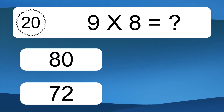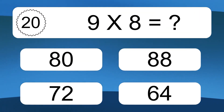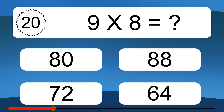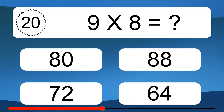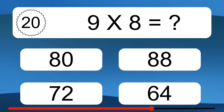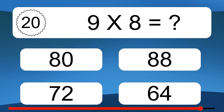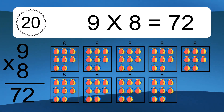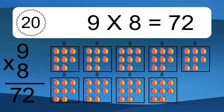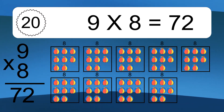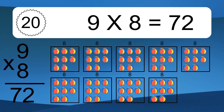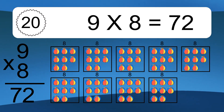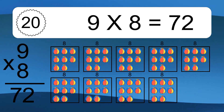9 times 8 equals what? 9 times 8 equals 72. We have 9 boxes, and each box has 8 colorful balls inside. If you count all the balls in all the boxes together, you will have 9 times 8 balls. This equals 72 balls.